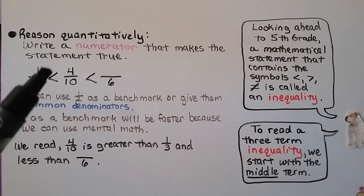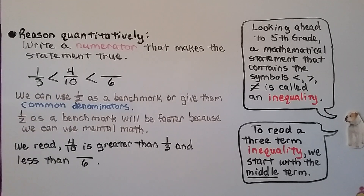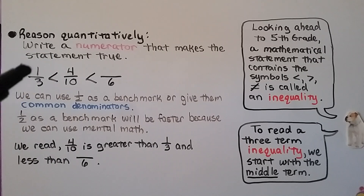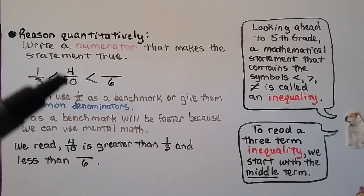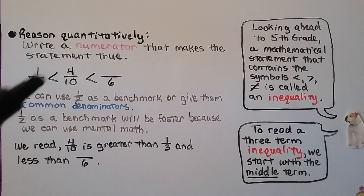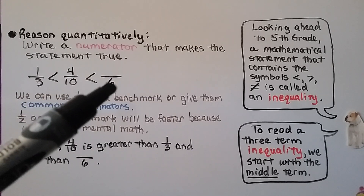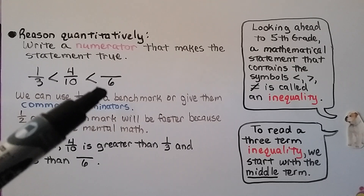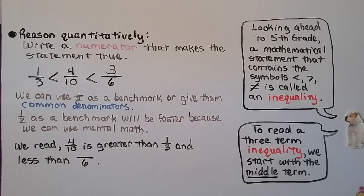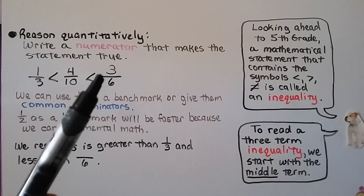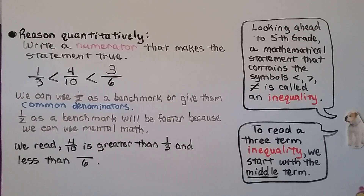Now take a look at this: we have one-third, and it's less than four-tenths, which is less than some fraction with six as a denominator. We need to write a numerator to make the statement true. We can use half as a benchmark — one-third is less than half, and four-tenths is less than half, since five-tenths would be half. So we need the fraction with denominator six to be half or greater. Three-sixths equals half, so that works. We could also choose four-sixths, five-sixths, or six-sixths — any of those would be correct.